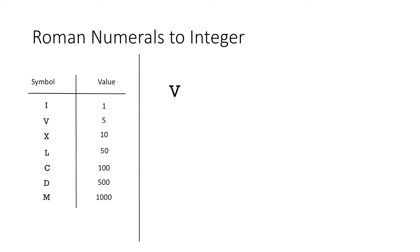Suppose we take the symbol V which represents 5 in roman numerals. If we add the symbol I to its right, it means we are adding the value of I to V, which makes it 5 plus 1, that is 6. Similarly, if we add the symbol I to the left of symbol V, this means we are subtracting its value from symbol V, thus making the overall value 4.